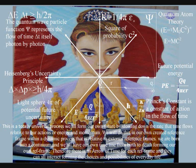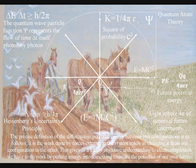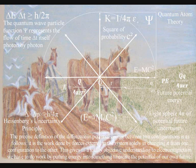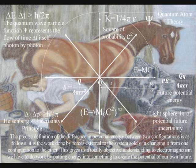The precise definition of the difference in potential energy between two configurations or reference frames is as follows: it is the work done by forces external to the system solely in changing it from one configuration to another. This gives us a totally objective understanding to the electromagnetic force. We have to do work by putting energy into something to create the potential of our own future within that reference frame.